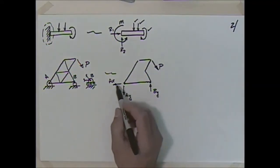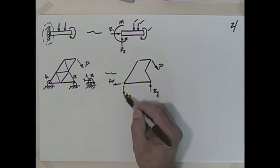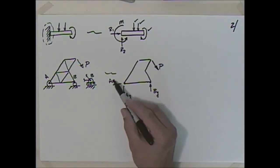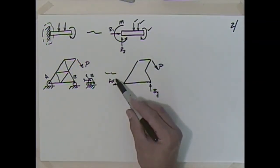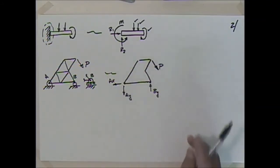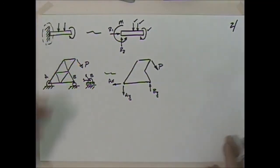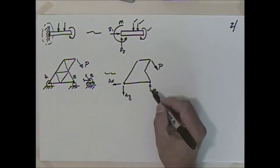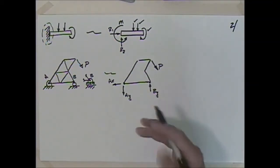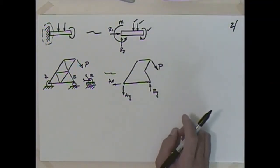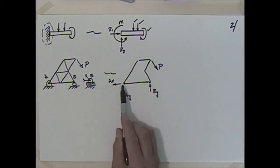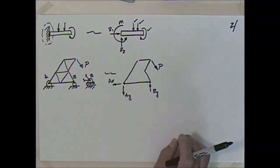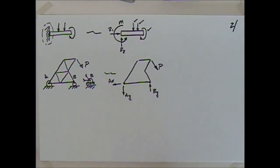You might ask how I knew which direction to draw these forces. I guessed. If I made a bad guess, I'll get a negative number in my solution, indicating the real force goes the opposite way. As you gain experience you can often predict the direction correctly, avoiding negative signs. But it's not worth fretting over — just put the force in and let the math take care of the sign. Some problems are complicated enough that it's hard to tell, so just pick a direction and solve.